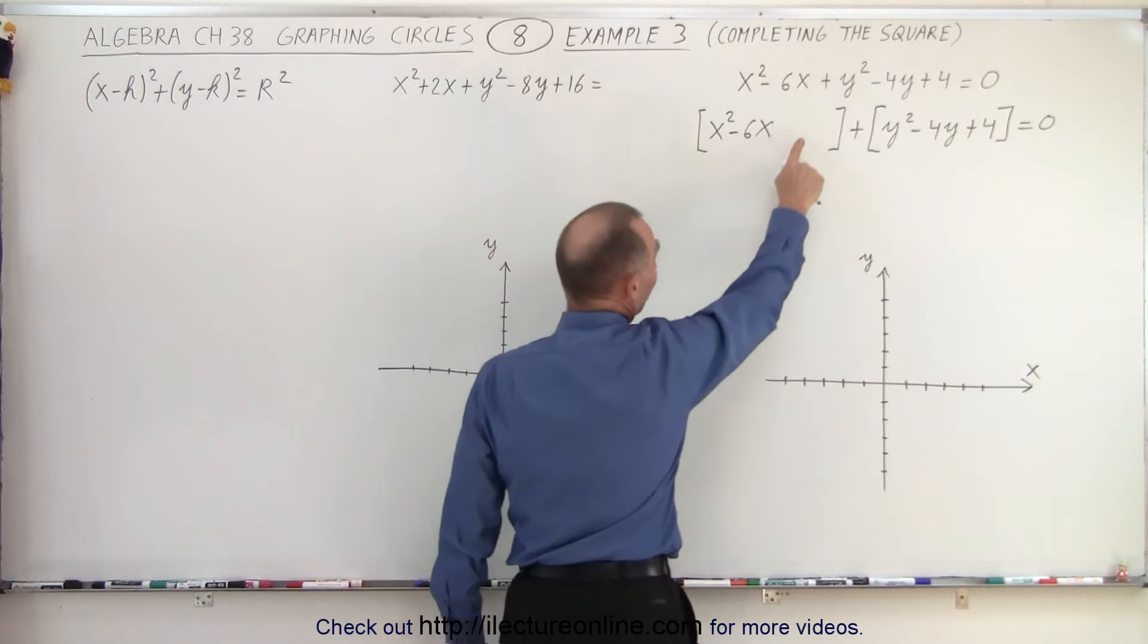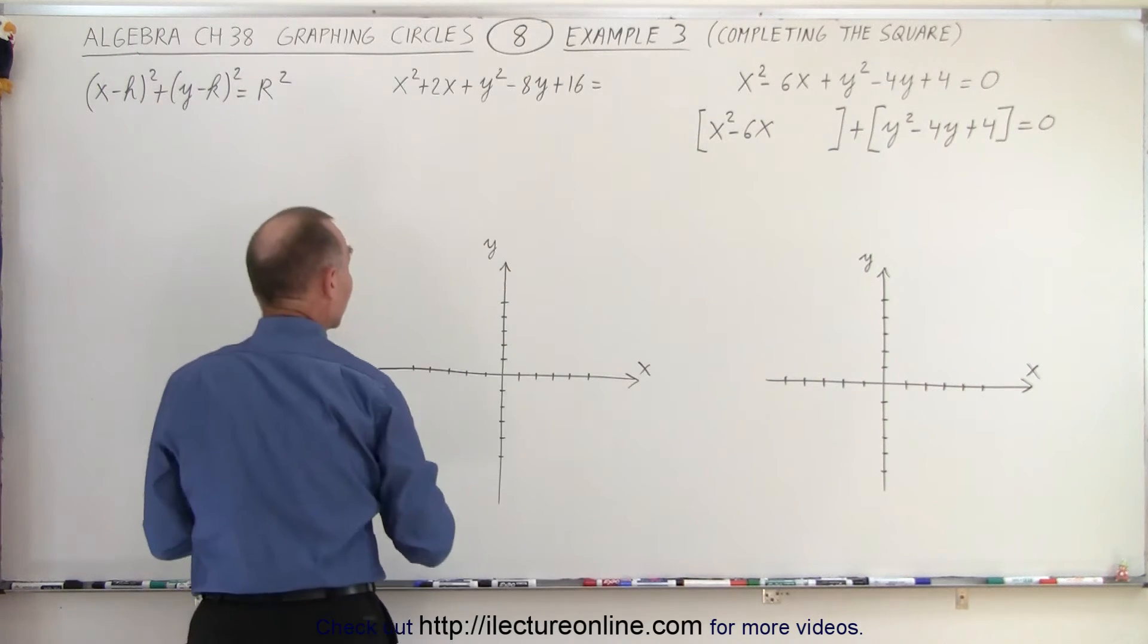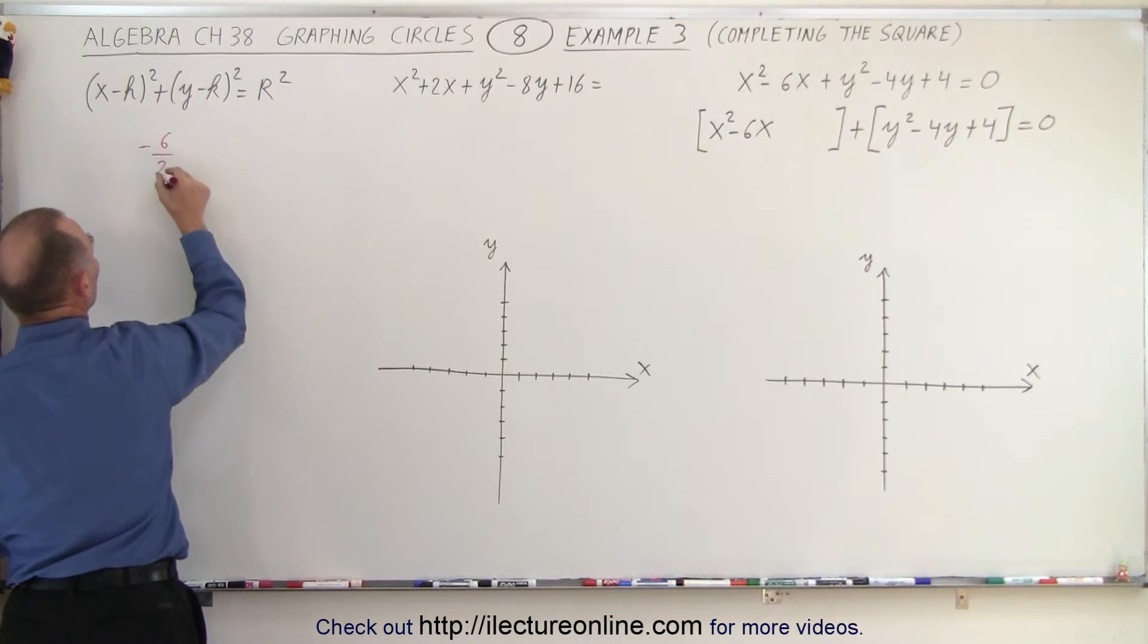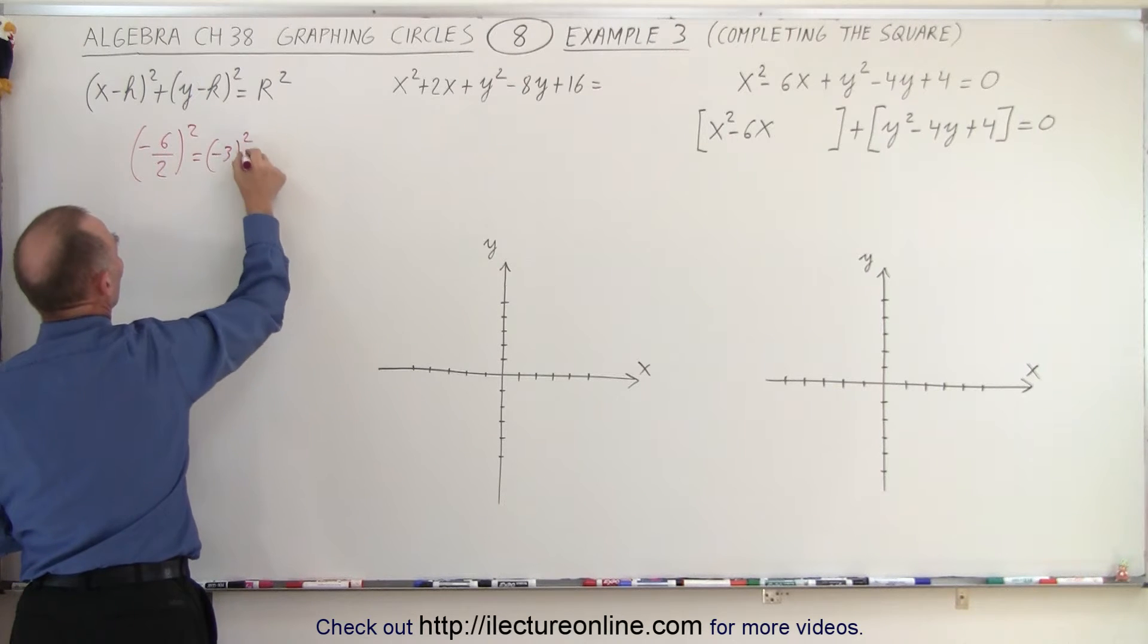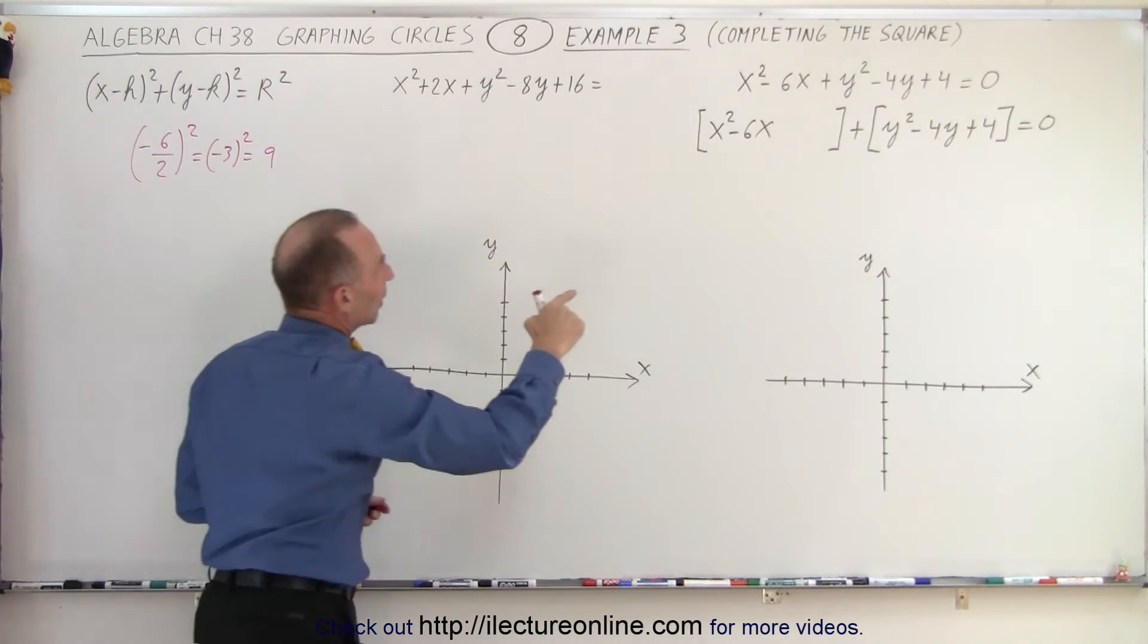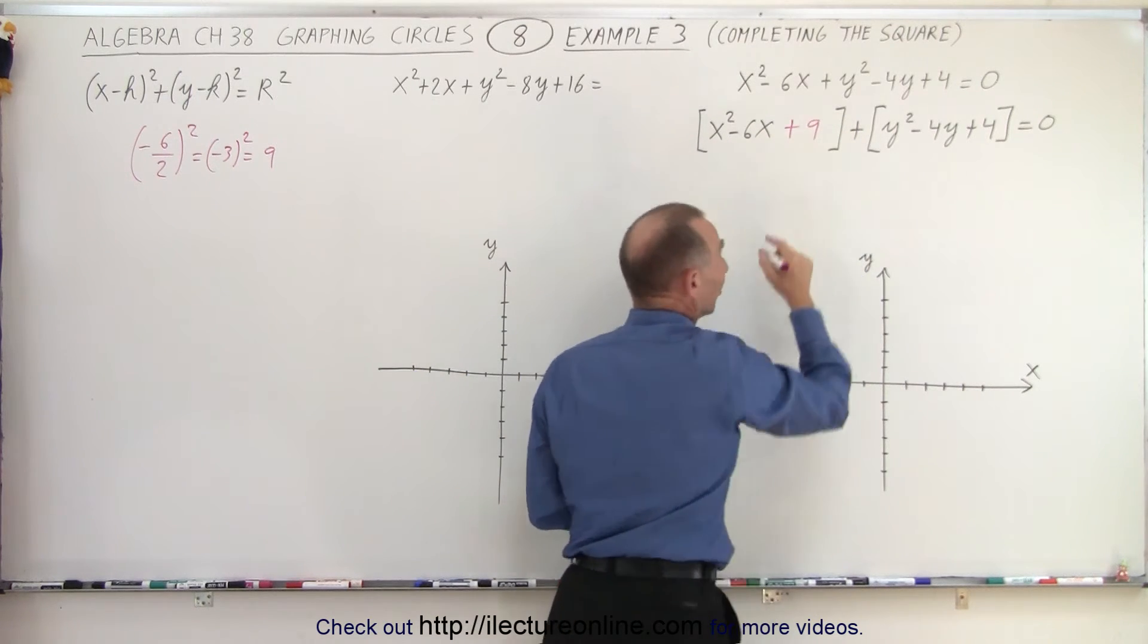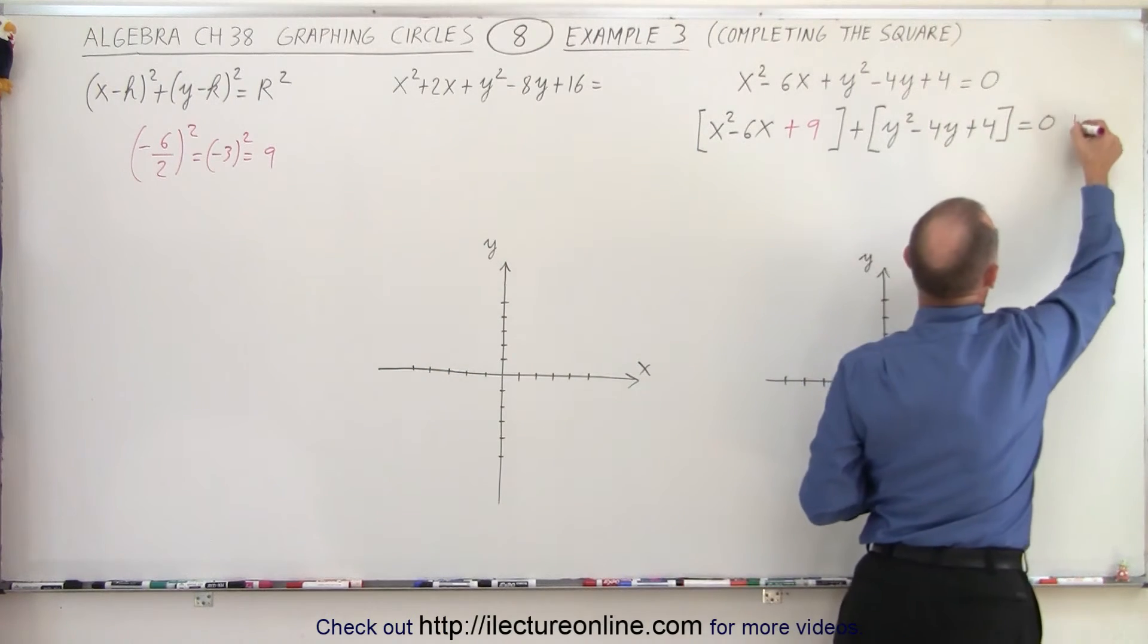And in order to figure out what to place here, we take this number right here, the negative 6, and let's work that out on the side here. Negative 6, we divide it by 2, and we square it. And that means negative 3 quantity squared, which is 9. So, to make this into a perfect square, we need to add 9 here. But, of course, if we add 9 on the left side of the equation, we must add 9 to the right side of the equation.